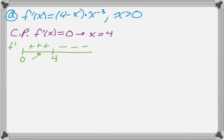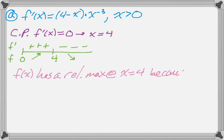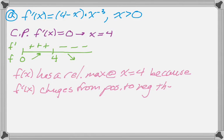And that means that the function itself is increasing and then decreasing. And so f of x has a relative maximum at x equals 4, and the reason for that is because f prime changes from positive to negative there. Alright, so that's part A, nothing too bad.